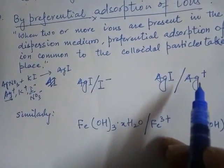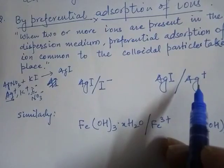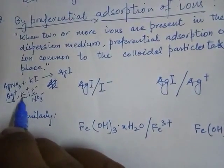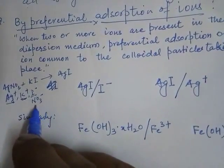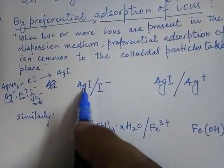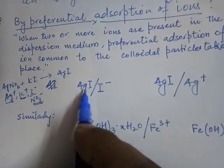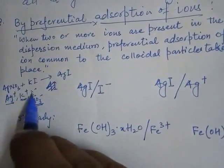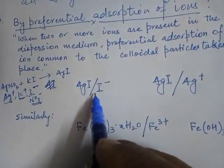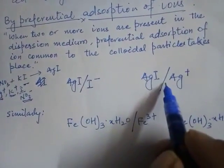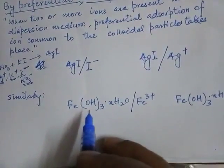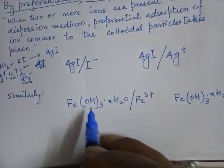Only I⁻ or Ag⁺ are preferentially adsorbed. K⁺ and NO₃⁻ are also present in the solution but are not adsorbed by the sol particles. As a result, we get either negatively charged or positively charged silver iodide sol. Similarly, iron hydroxide sol is another important example.